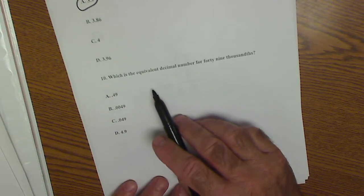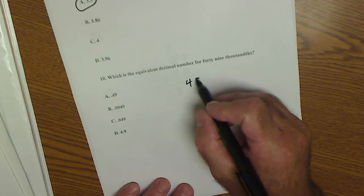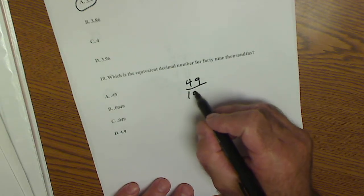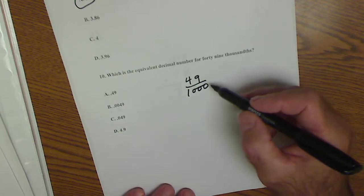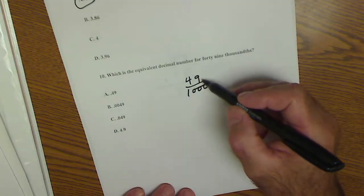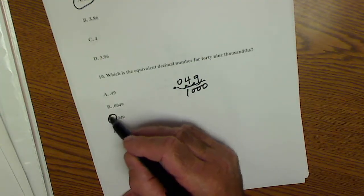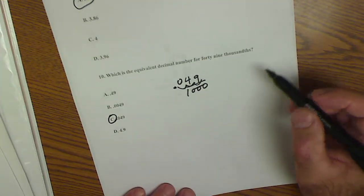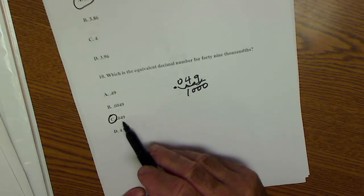Lastly, number 10, which is the equivalent decimal number for 49 thousandths. It's kind of the same as the first one. So I'm going to go over three places: 1, 2, 3. So it's going to be 0.049, which is answer C. And again, this is my tenths, my hundredths, and my thousandths. So that's 49 thousandths.